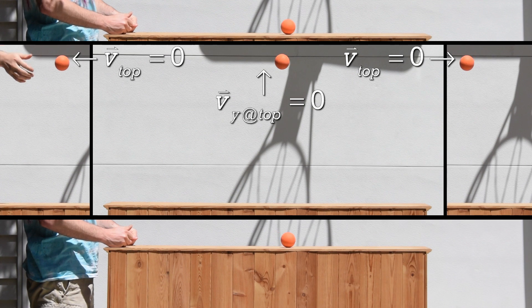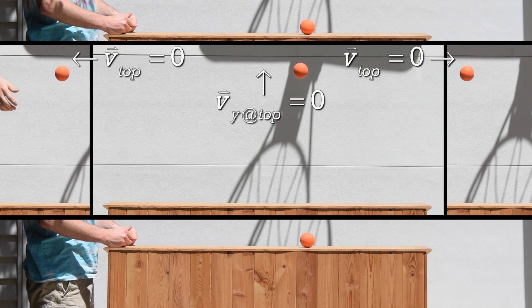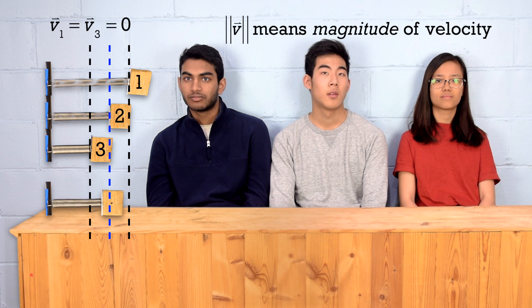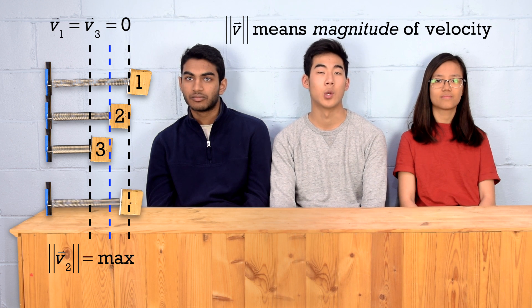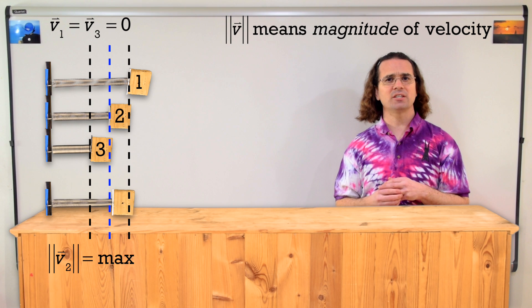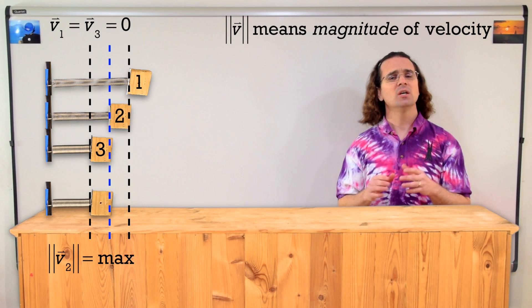Kevin, what do you think that means about the magnitude of the velocity of the mass at position two? Do you mean when it's going to the left or to the right? Either direction. Everything we are talking about today is the magnitude of the quantity, so the direction is irrelevant. Well, if the velocity is zero at the two endpoints, I bet it has a maximum magnitude in the middle at position two. That is correct. We will show why the magnitude of the velocity of the mass has its maximum value at position two in just a bit.